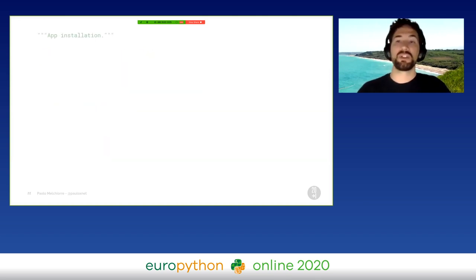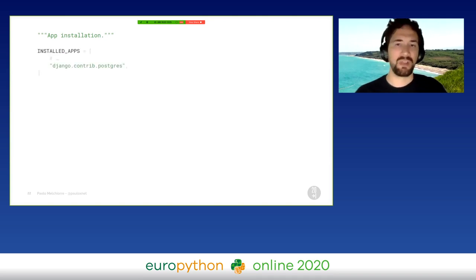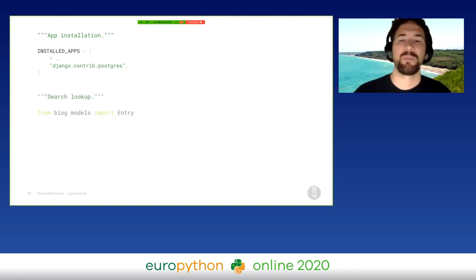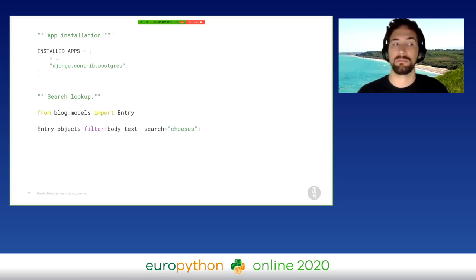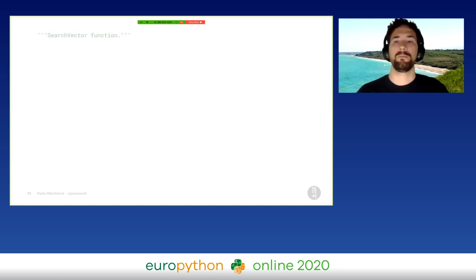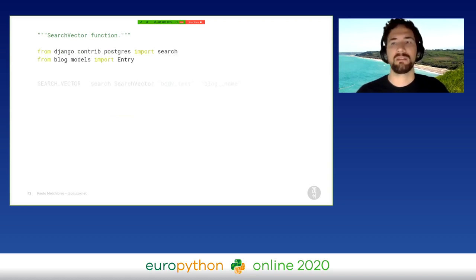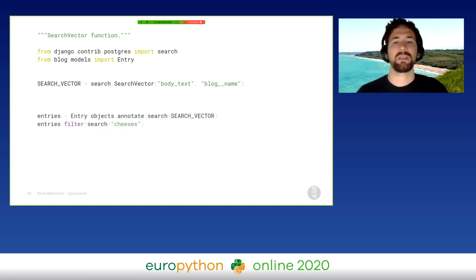To use all the above features, we have to add the Postgres module in the Installed Apps. After that, we will be able to perform a full-text search on a field. For example, we can search for a word in the plural form and have results in the singular form. To search text in more than one field, we can use the SearchVector function. We can define our document as the union of the entry body text and the related blog name. After that, we can search for a word and have more accurate results.